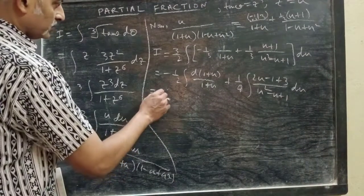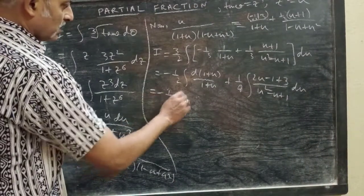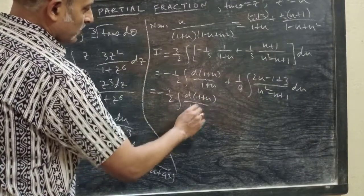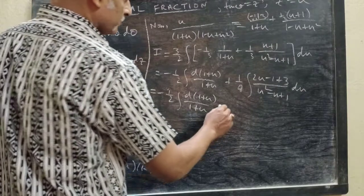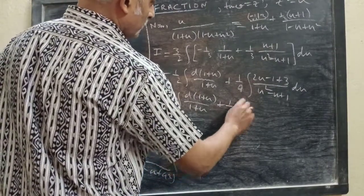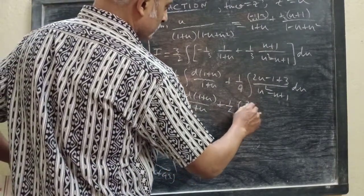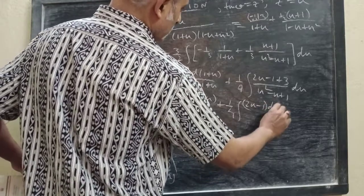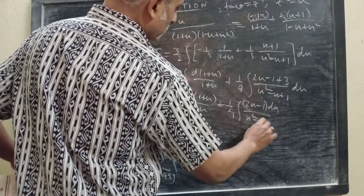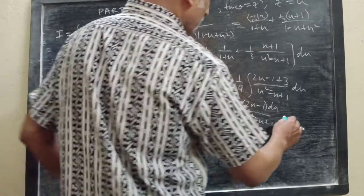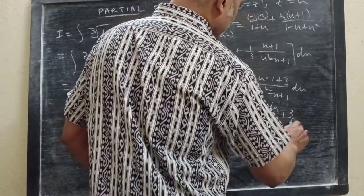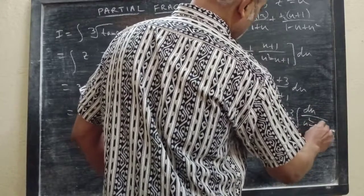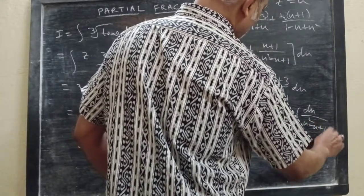Now writing: −(1/2) ∫ d(1 + u)/(1 + u), then (1/4) ∫ (2u − 1) du/(u² − u + 1), then plus (3/4) ∫ du/(u² − u + 1).